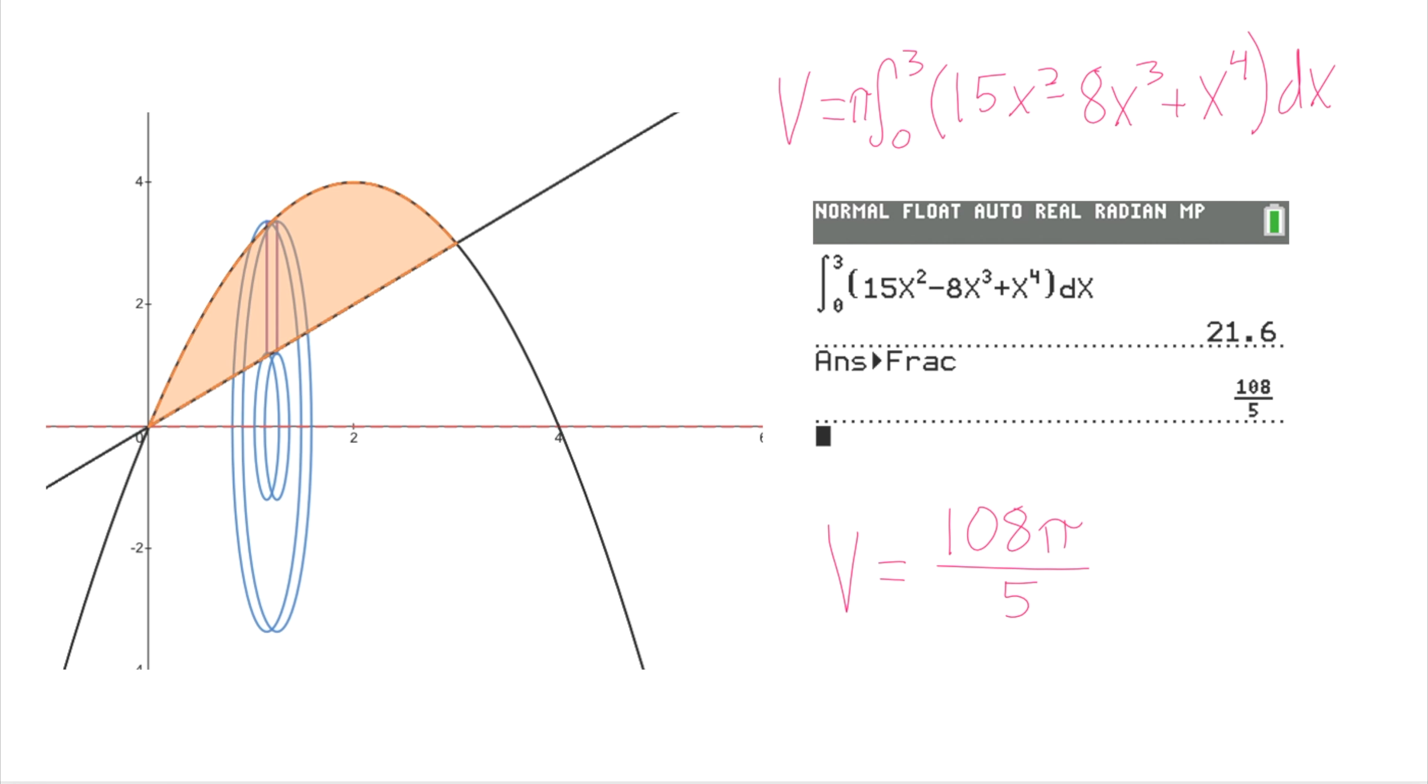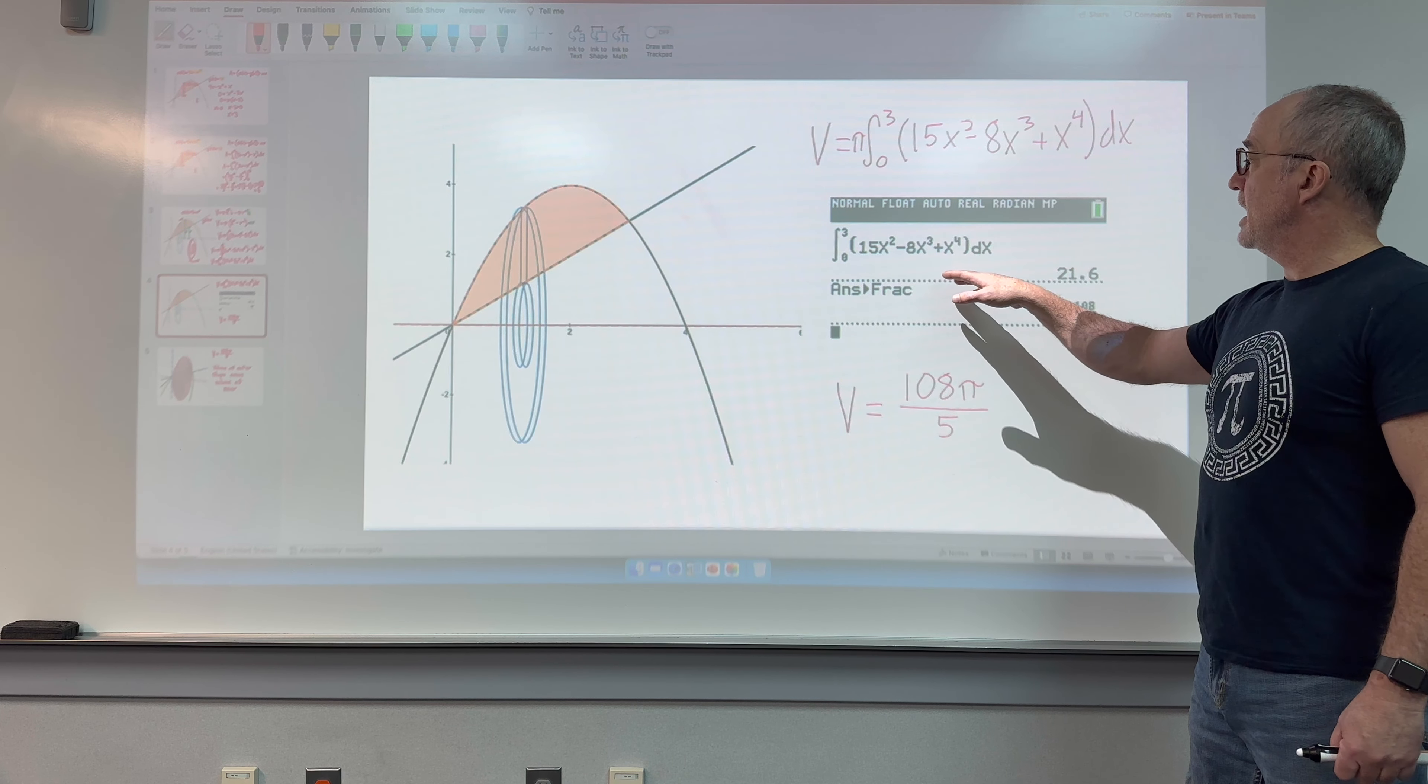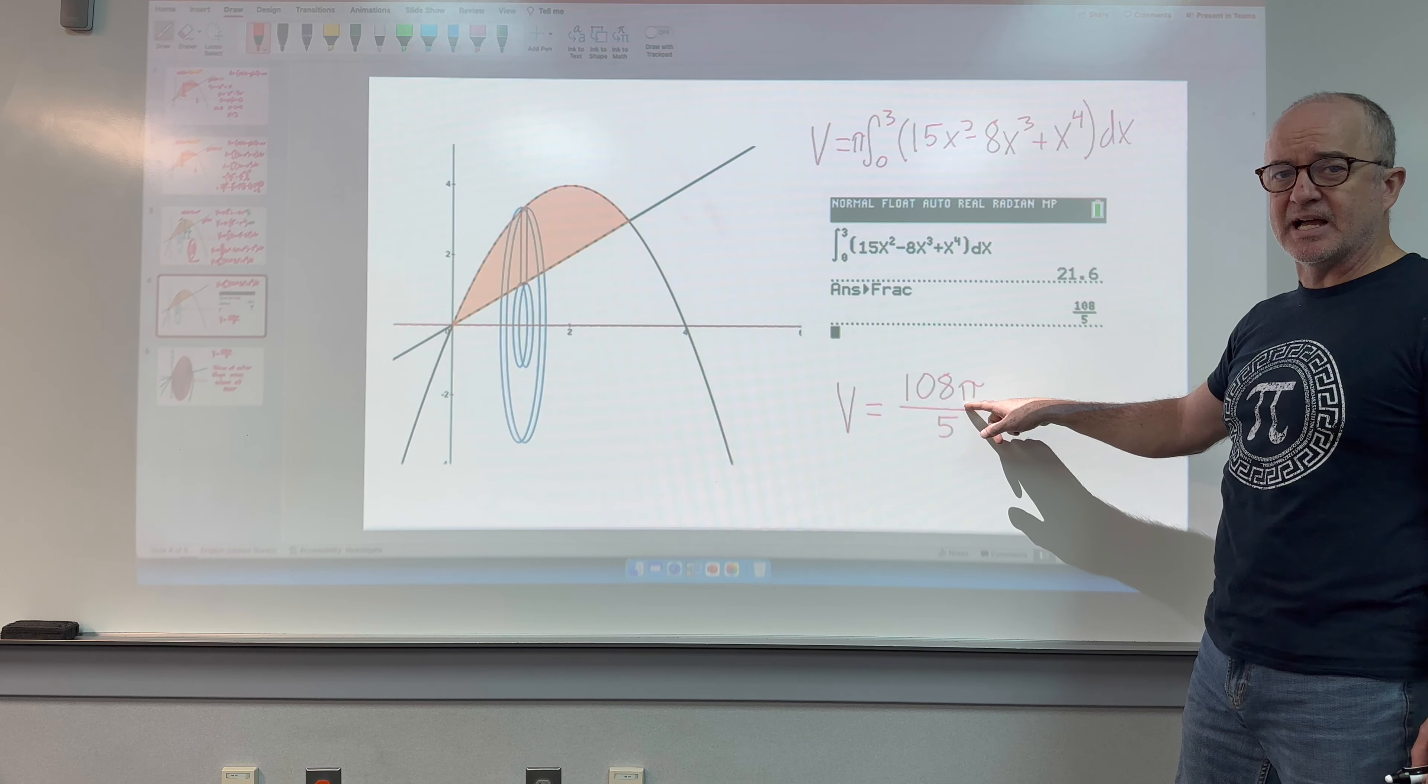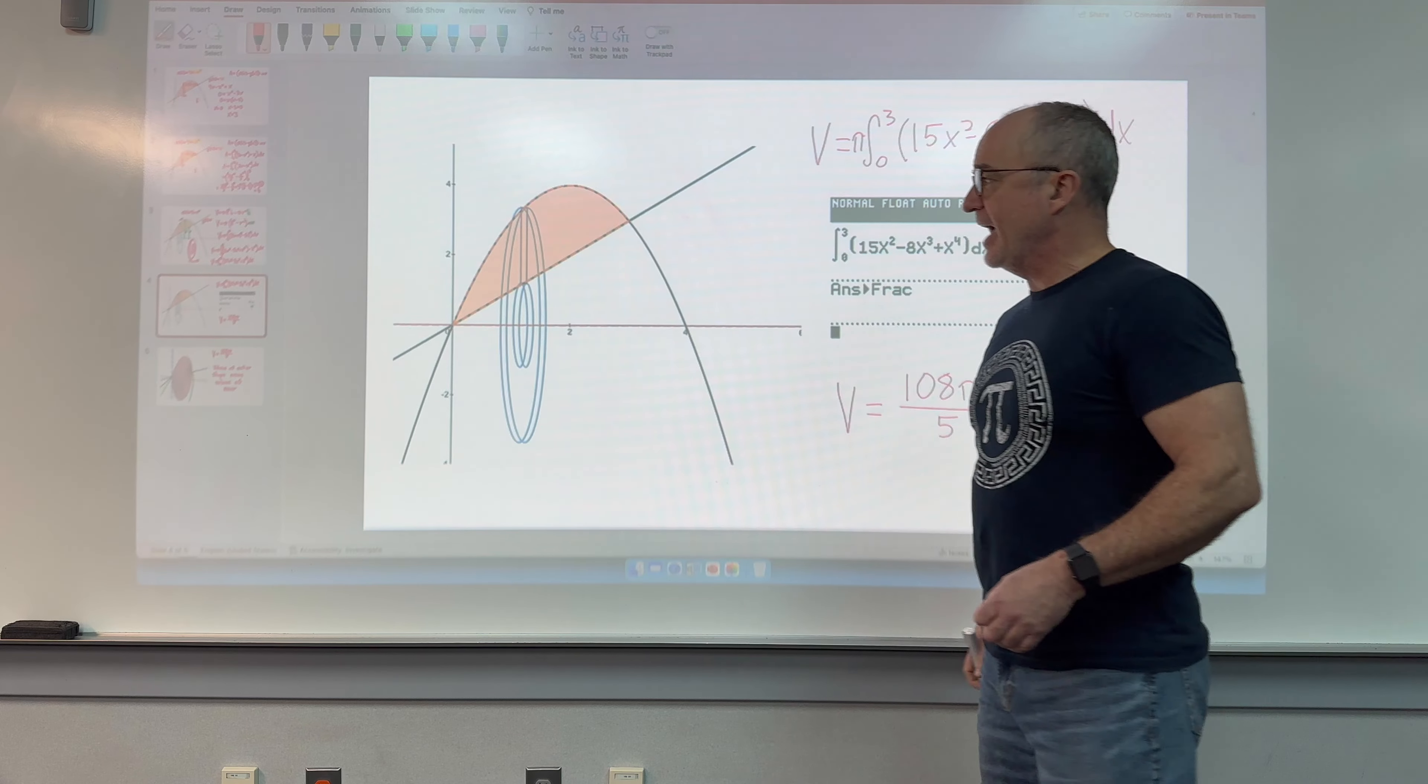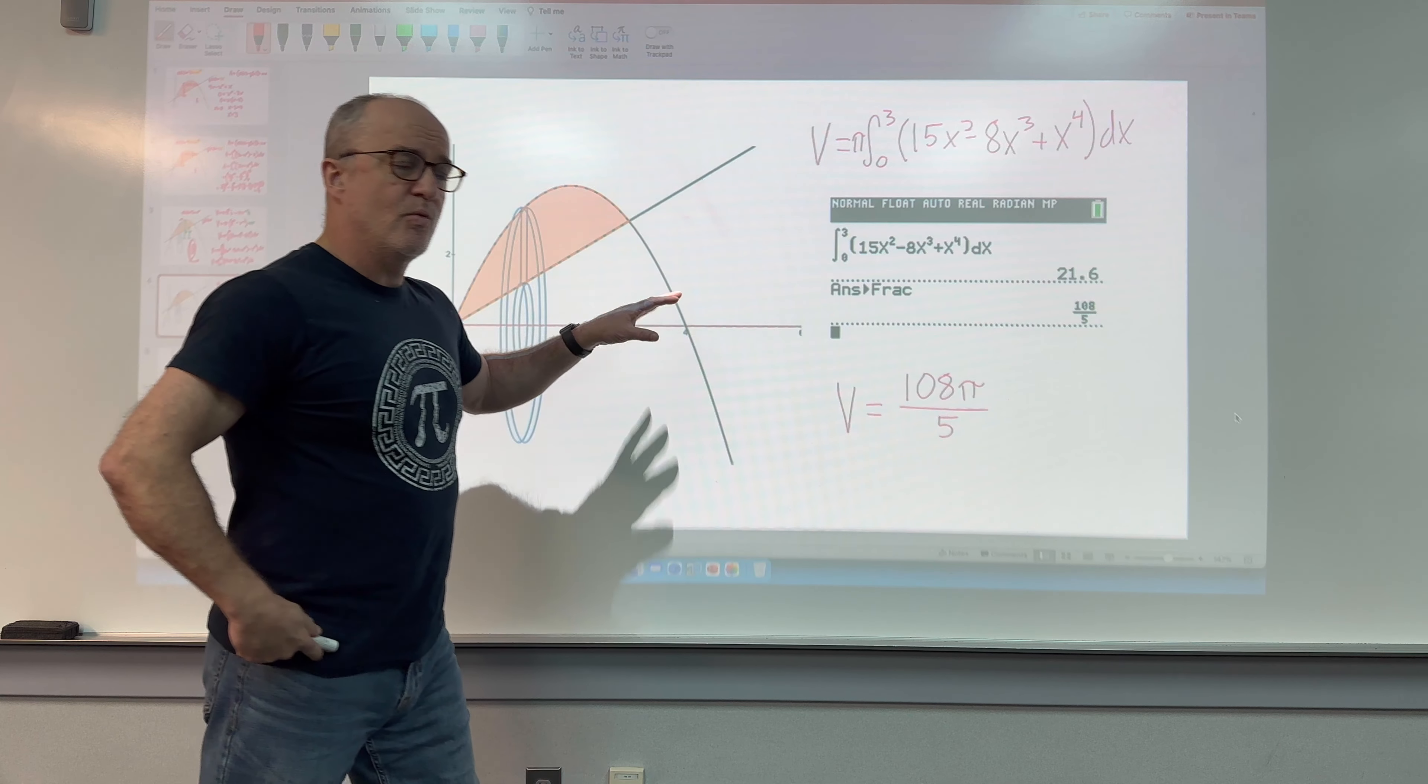And rather than take the time to work this out, I thought I'd show you what some of you already know, which is that your calculator can actually calculate integrals. I want you to notice I left the pi out. I didn't want to multiply this times an irrational number. I had the calculator determine the integral and had the calculator represent it as a fraction, because a lot of times even on the calculator section of an AP exam, the answers will look like this: 108 pi over 5. With the pi removed, I can turn my answer into a fraction and then add the pi afterwards. And that gives us the exact volume of this shape.